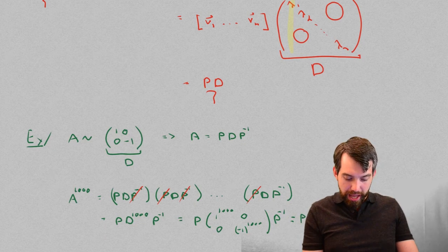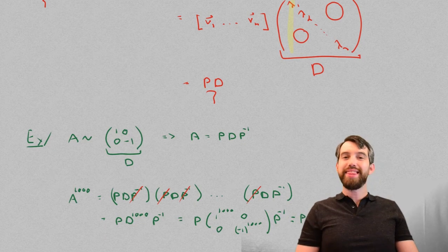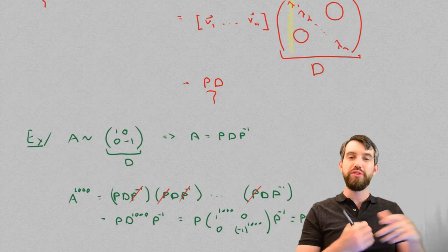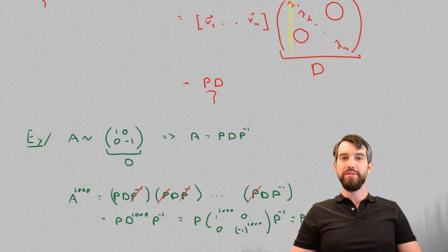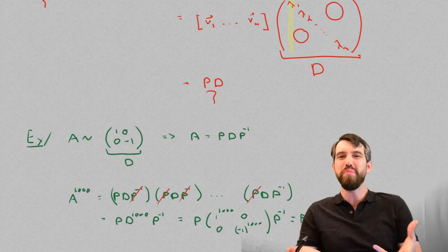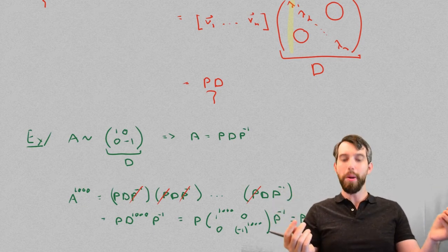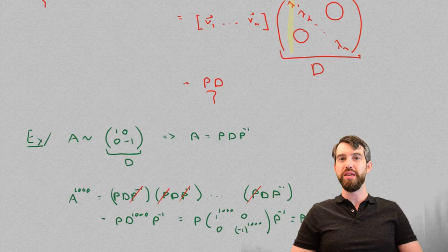P times P inverse. In other words, 1,000 multiplications of this matrix A is just the identity matrix. And this matrix A might be some really weird matrix, who knows, but 1,000 copies of it, in this particular case, turns out to be really easy.